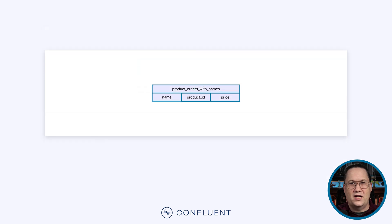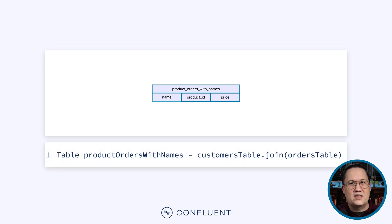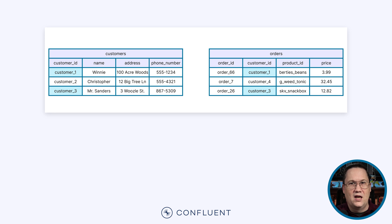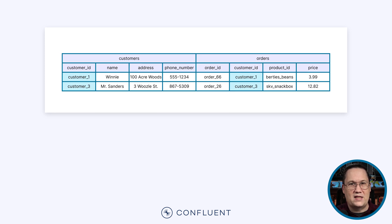What if we wanted to create a list of customer names, which products they ordered, and what the price was? We'll call this new table 'product orders with names'. This is where we could use a join. We need to specify how rows in the customers table will map to rows in the orders table. Looking at both tables side by side, we can see that some rows have a matching customer ID.